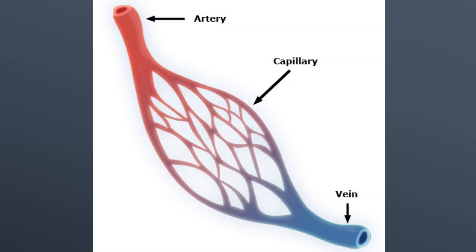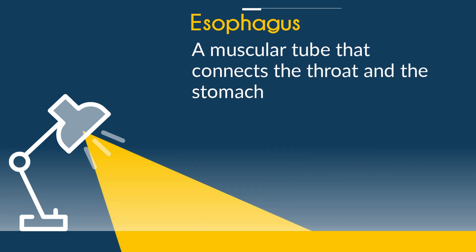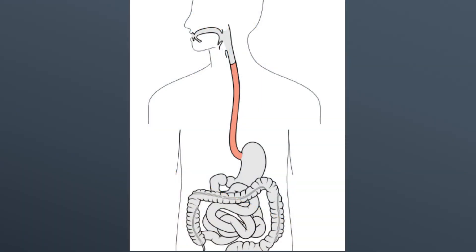Next, we have the Esophagus, a muscular tube that connects the throat and the stomach. And here's a picture of the esophagus.